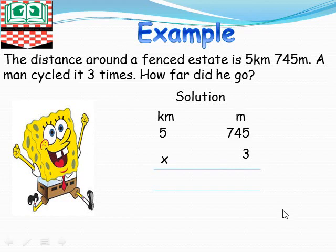Now, three times five. Three times five is 15. We write five and carry one.